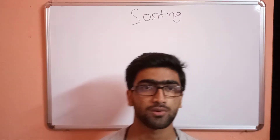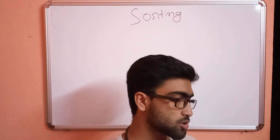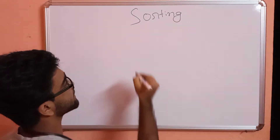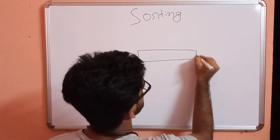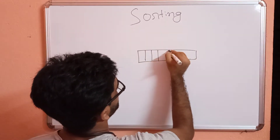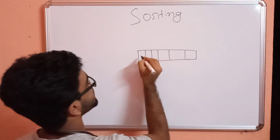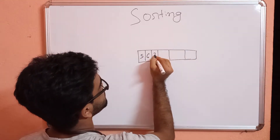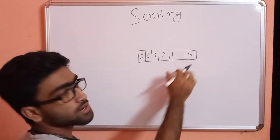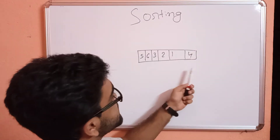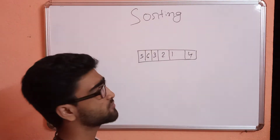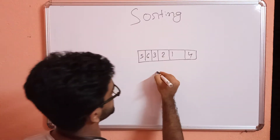First of all, why is sorting needed in computer science? Suppose this is a list — an unsorted array. In this unsorted list, finding an element will be much more difficult than in a sorted list.